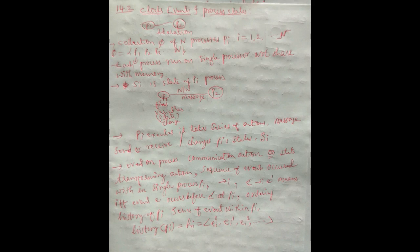P1 communicates to p2 through the network using messages. P1, running on a computer, can have variables and files associated with it. At any instance of time, if it is running, those files and variables may change — we say the state of the process has changed. Events on a process represent actions such as message send or receive, or state transformation actions.